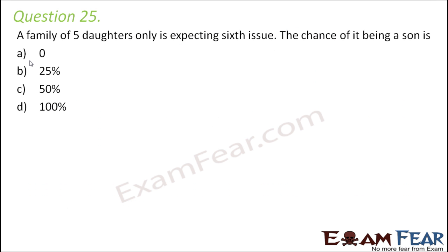Question number 25. A family of 5 daughters only is expecting a 6th issue. The chance of it being a son is... So the family already had 5 daughters and now the 6th child is going to arrive. How do we know whether it will be a son or a daughter? This is very simple — the first statement has been written just to confuse you. It doesn't matter how many children are already existing. The possibility of having a son or a daughter is always 50%.